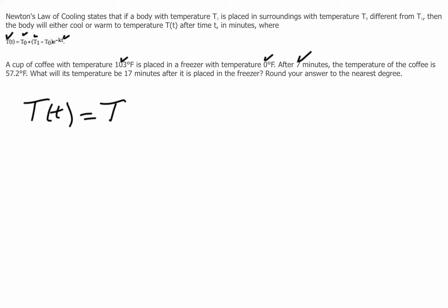So temperature of the freezer plus the temperature that the body starts with minus the temperature of the freezer times e to the minus kt. So after a while it got to be 57.2, so this would be 57.2 equals T₀.